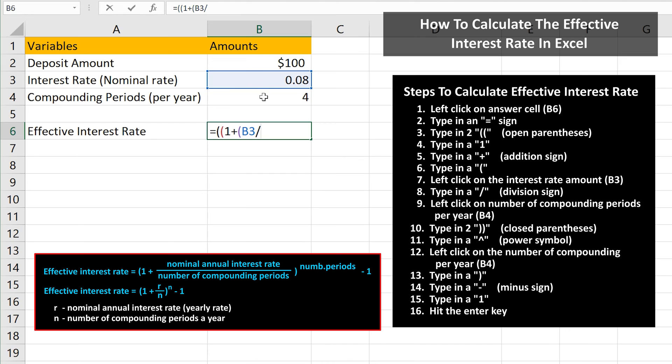Next, we type in a division sign, which is a forward slash in Excel. And now, we need to left-click on the number of compounding periods per year, cell B4. From here, we type in two close parentheses, which closes off the 1 plus r over m portion of the formula.